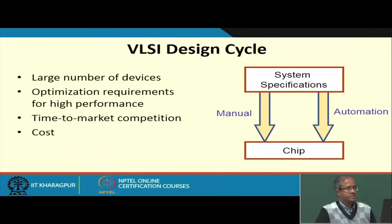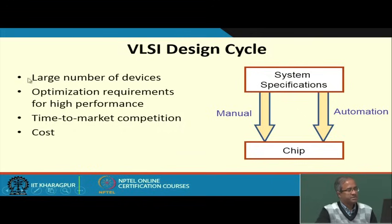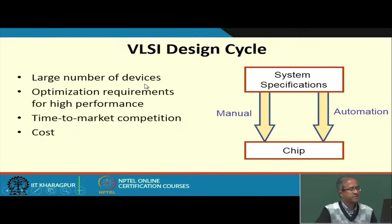Let us first try to understand the VLSI design cycle. With the advancements in semiconductor technologies today, we are having to handle a very large number of devices, which can go up to and beyond a billion transistors in a device. There are many applications which demand high performance and also low power, because many applications today operate on battery — they are mobile handheld devices like mobile phones. Performance and power consumption are two very important requirements.